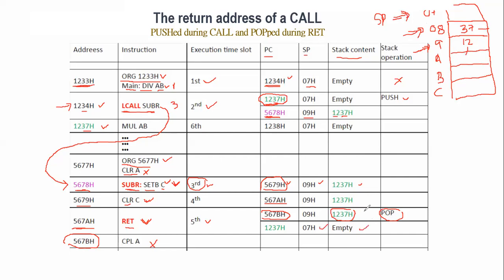So the new value of PC is 0x1237, and the processor jumps back to 0x1237. At 0x1237 is MUL AB (multiply AB), which will be the sixth instruction executed. This is a one-byte instruction, so the next PC value becomes 0x1238. So the processor correctly returns from the subroutine back to the instruction immediately after the LCALL.